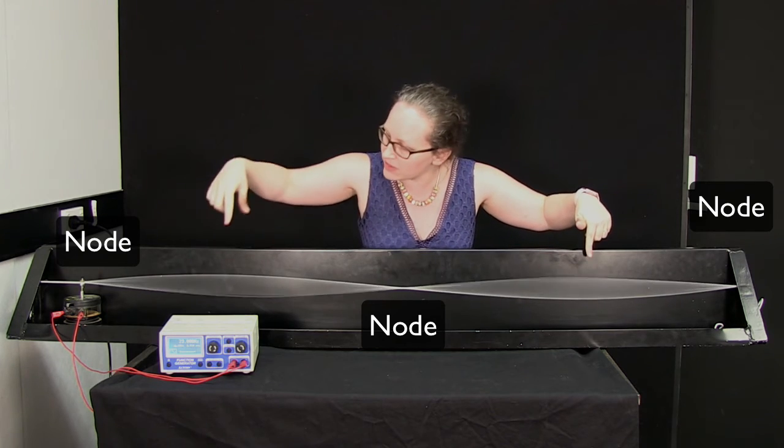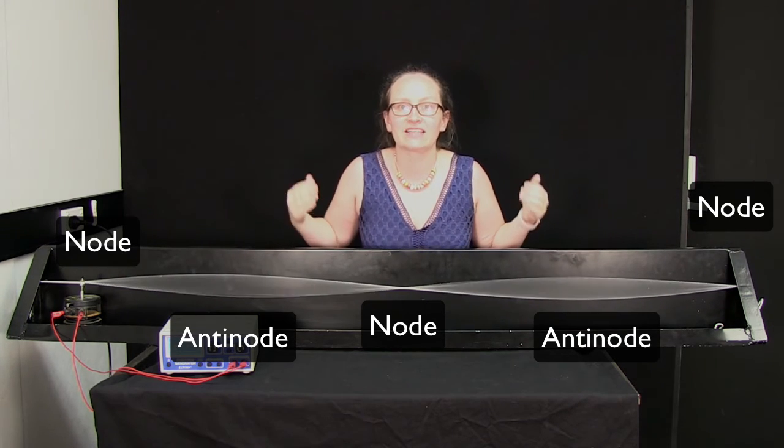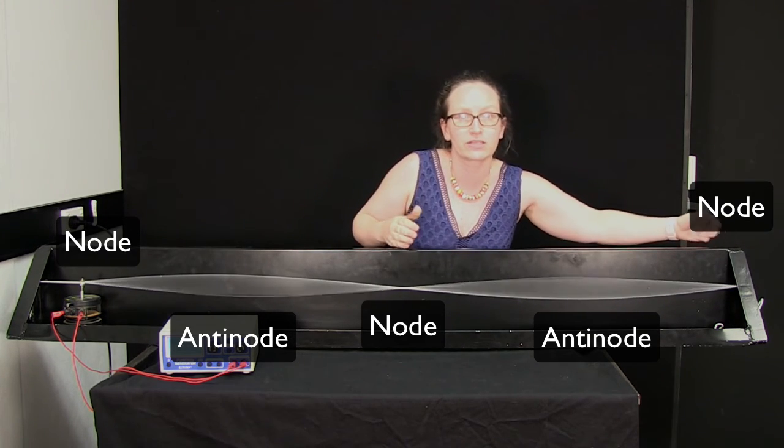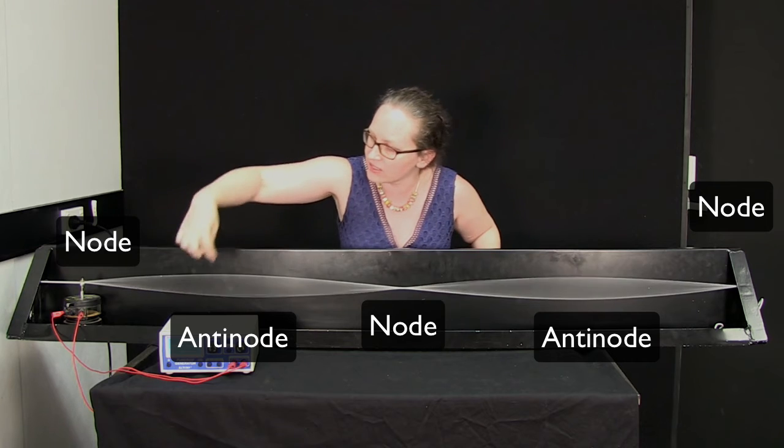The places with the largest movement are known as the antinodes, and they occur halfway between the nodes. At each piece of the string,